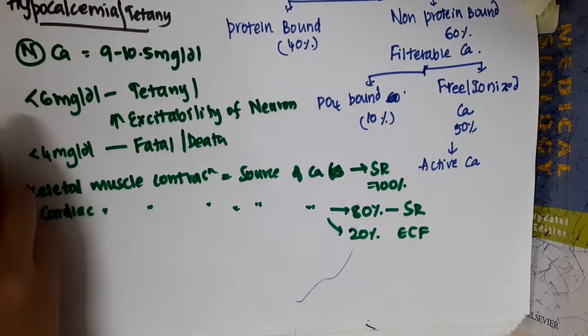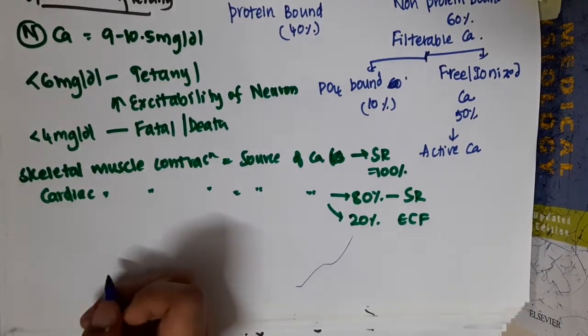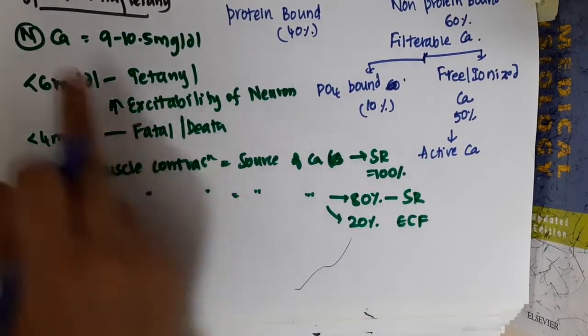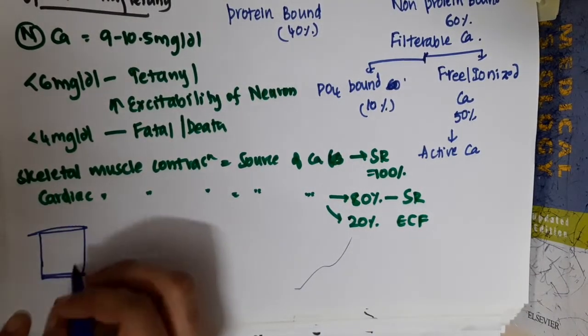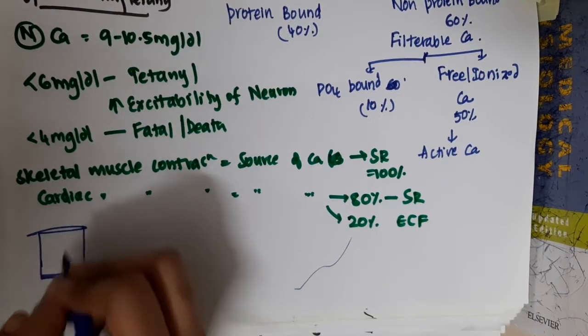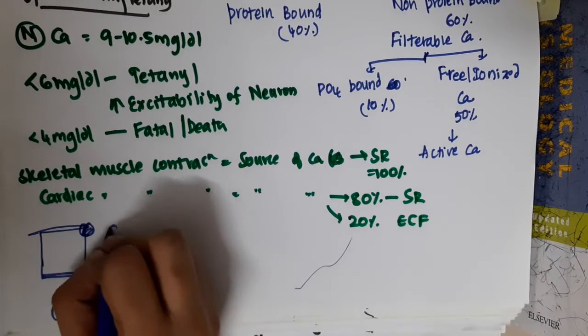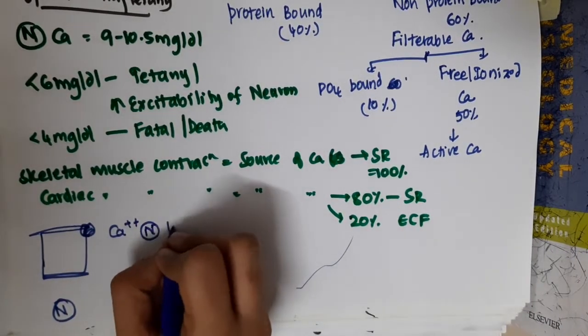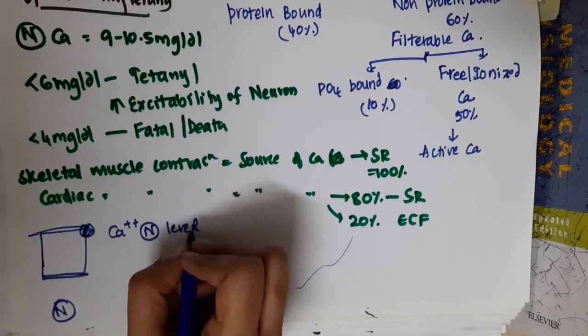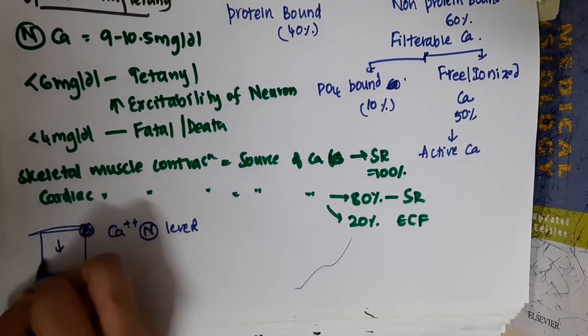Why does hypocalcemia cause excitability? In the normal cell, calcium is present outside at normal level. Because of that, the potential difference will be normal, so there is decreased sodium permeability when the calcium on the outer cell is at normal levels.